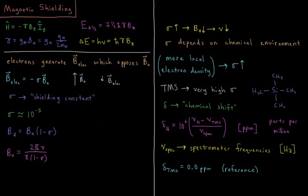is going to equal 2 pi, times the frequency of the photon, divided by the magnetogyric ratio, times 1 minus sigma. The 2 pi here comes from the fact that we have an H here and an H-bar over here. So H equals 2 pi H-bar, so that's where this 2 pi is going to be coming from.